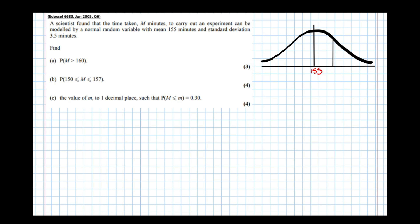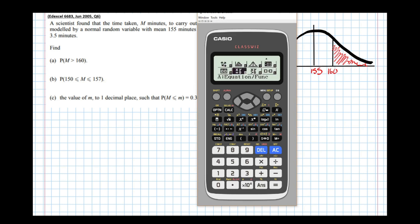Now this graph goes on forever, all the way up to infinity. So marking on the 160 at our boundary, it's this area here I've just shaded in that we're going to calculate. Now the way we do that, we get our calculator and put it in distribution mode, that's mode 7. I'm going to do the normal cumulative distribution, normal CD, which is option 2.